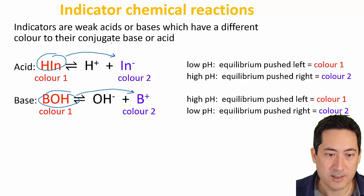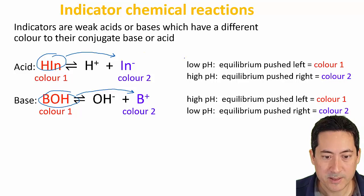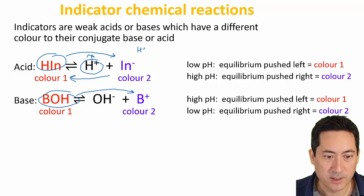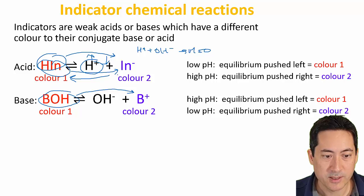With acid-base titrations we're either adding acid or base. If we add more acid, that will increase this side and it'll start going from this color into this color. Or if we add more base, it'll remove the H+ ions, neutralize them into water, and so this will decrease and we'll get more of this color turning into this color.